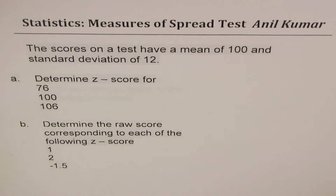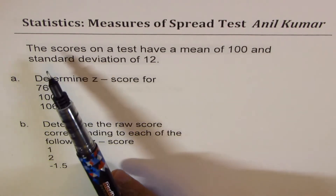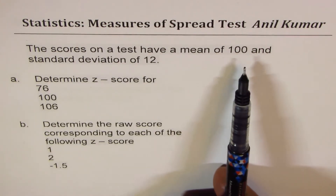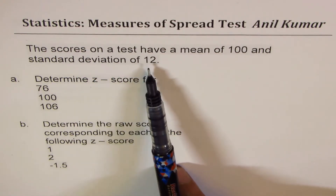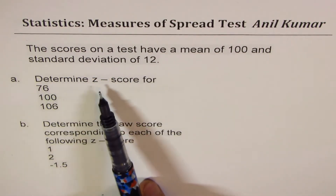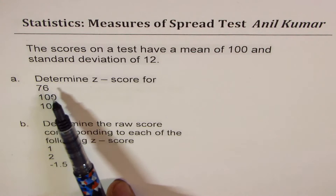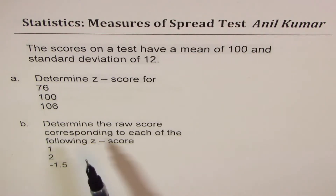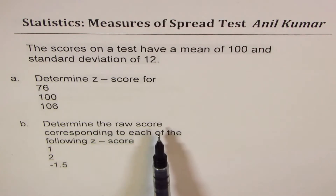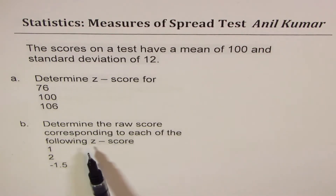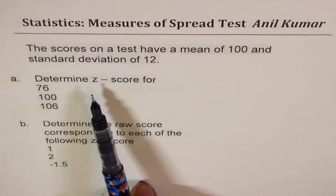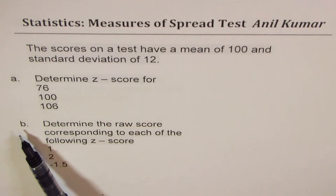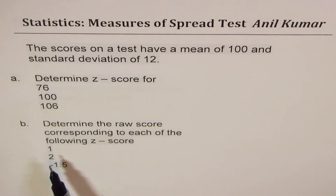Here is the very first question for you. The scores on a test have a mean of 100 and standard deviation of 12. Determine Z-score for 76, 100 and 106. Part B is: determine raw scores corresponding to each of the following Z-scores. So in Part A we have to calculate Z-scores, and in Part B we have to calculate the raw score from Z-score.